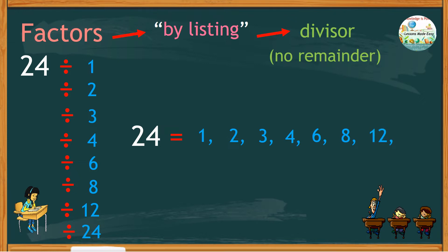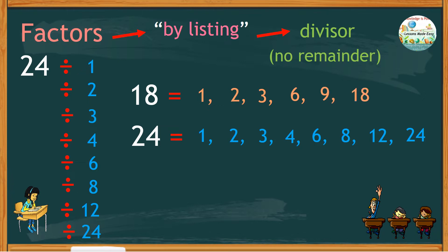So the factors of 24 are 1, 2, 3, 4, 6, 8, 12, and 24. Earlier we also learned that the factors of 18 are 1, 2, 3, 6, 9, and 18. Now study the factors of both 24 and 18 — what are their common factors?